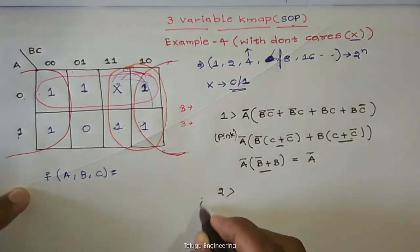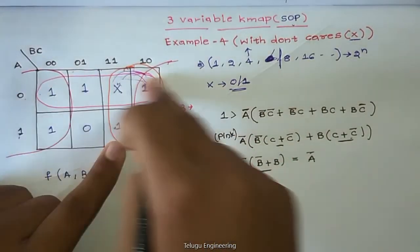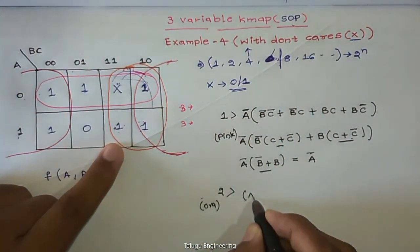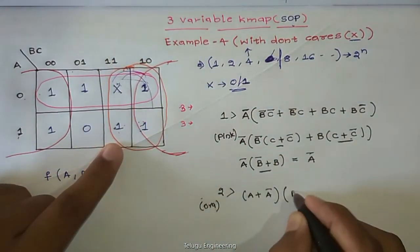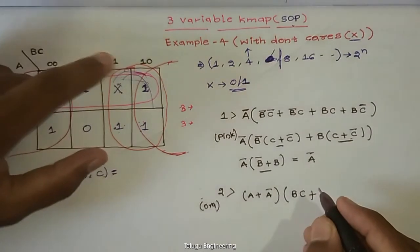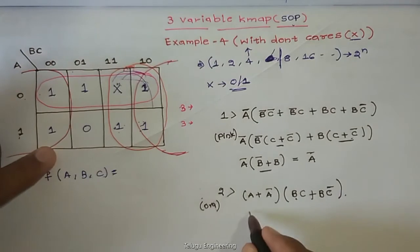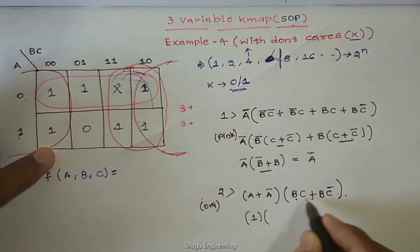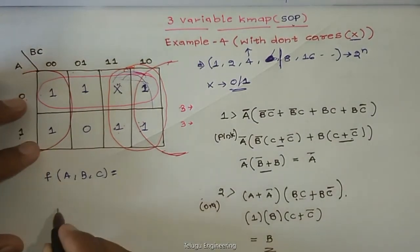This is orange color, this is pink color. Orange: A plus A bar, next column is 1 plus BC. Next, 1 plus B, 0 plus C bar. A plus A bar, here is B common, C plus C bar, that will be 1, final will be B.